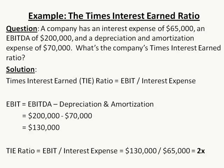To get EBIT, it's EBITDA minus depreciation and amortization. We're given EBITDA of $200,000 and depreciation and amortization expense of $70,000. So take $200,000 minus $70,000 to get EBIT of $130,000. Now plug into the TIE ratio: $130,000 for EBIT, and we're given interest expense of $65,000.